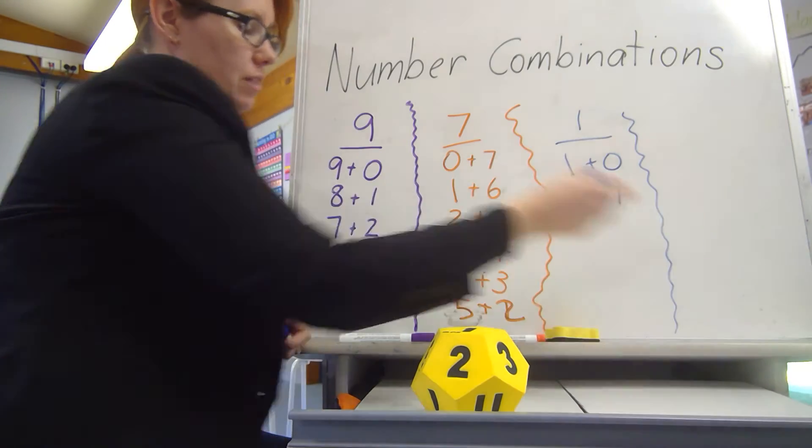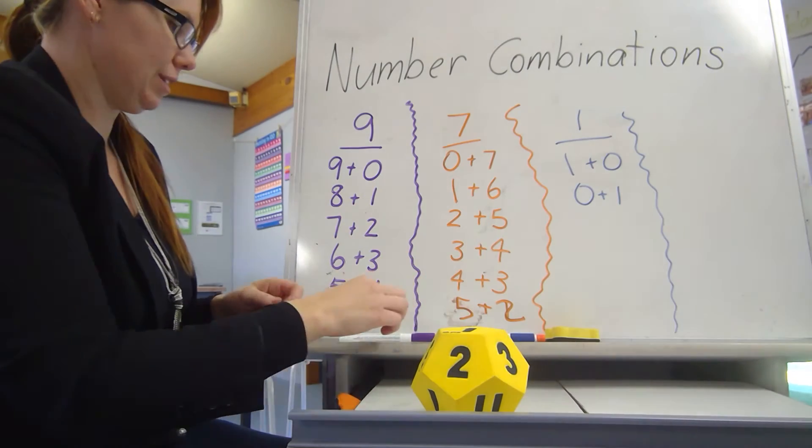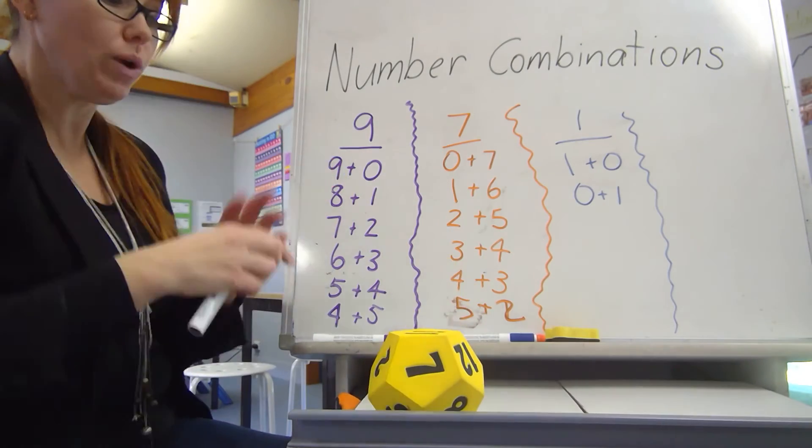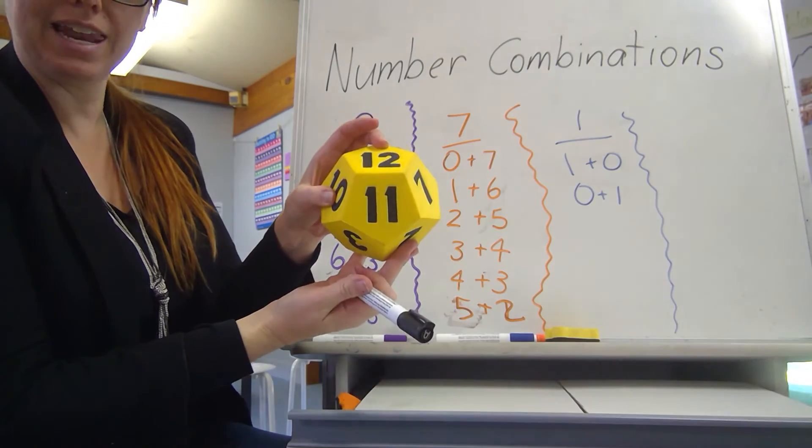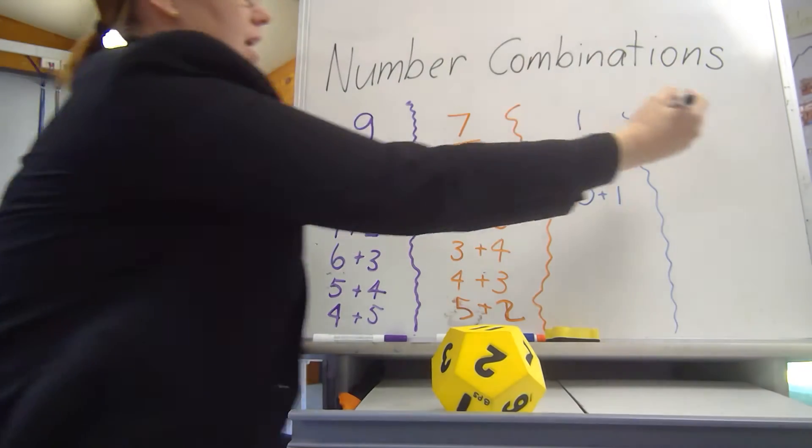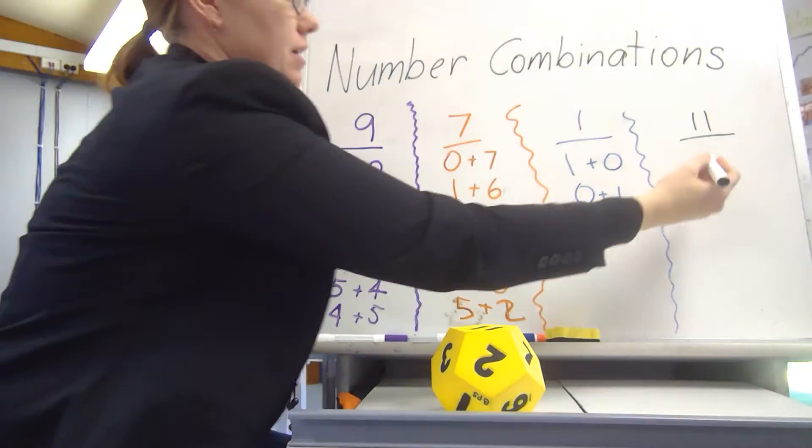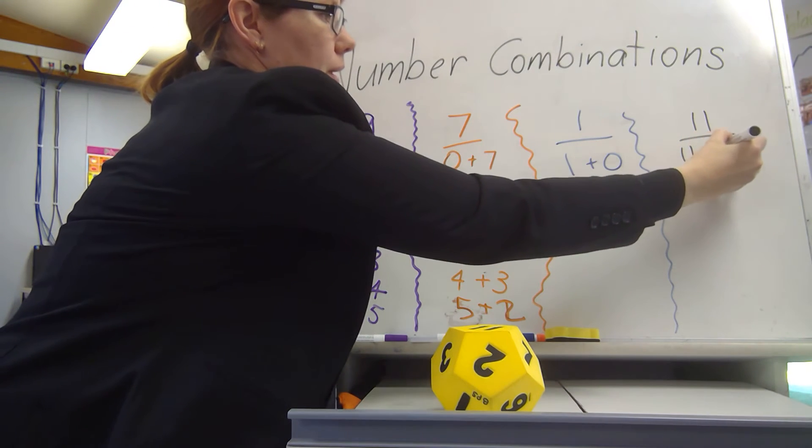You know, just because I rolled a really low number. Let's do one more. Last one. Oh, 11. That's a good one. 11. I like that. Because there's heaps. The bigger the number, the more combinations you'll get. So, easy one. 11 plus 0.